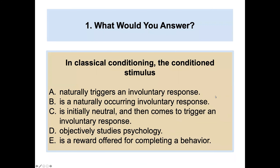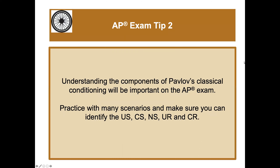Comprehension check: in classical conditioning, the conditioned stimulus is — the answer is C — initially neutral and then comes to trigger an involuntary response.